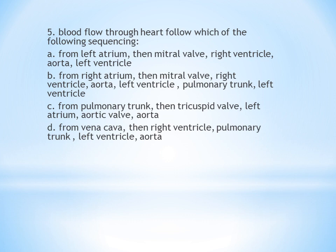Fifth question: Blood flow through the heart follows which sequence? A. Left atrium, mitral valve, right ventricle, aorta, left ventricle. B. Right atrium, mitral valve, right ventricle, aorta, left ventricle, pulmonary trunk, left ventricle. C. From pulmonary trunk, tricuspid valve, left atrium, aortic valve. D. From vena cava, right ventricle, pulmonary trunk, left ventricle, aorta.